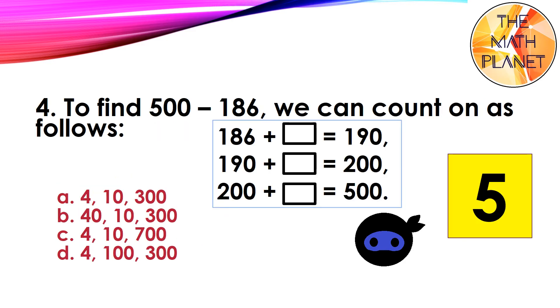Question 4. To find 500 minus 186, we can count on as follows. Is it 4, 10 and 300, or 40, 10 and 300, or 4, 10 and 700? The correct answer is A: 4, 10 and 300.